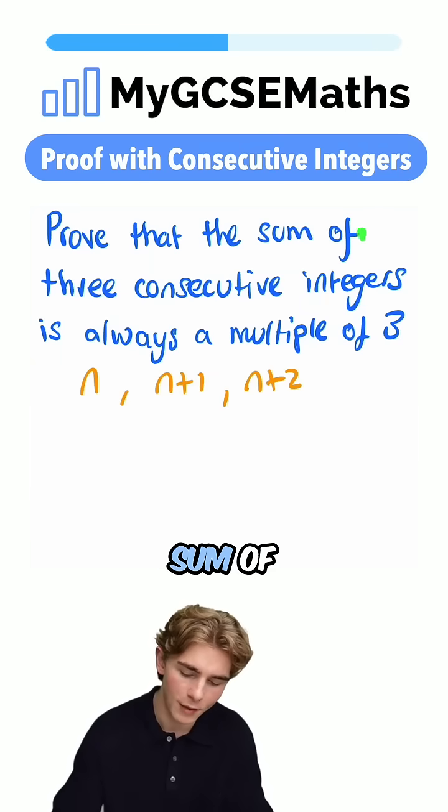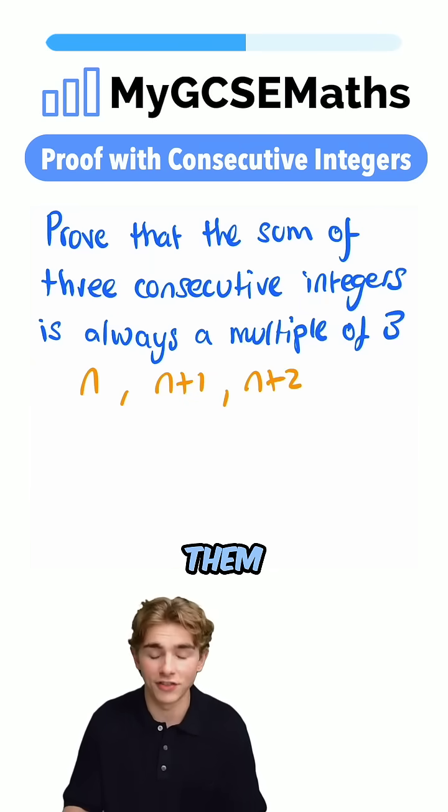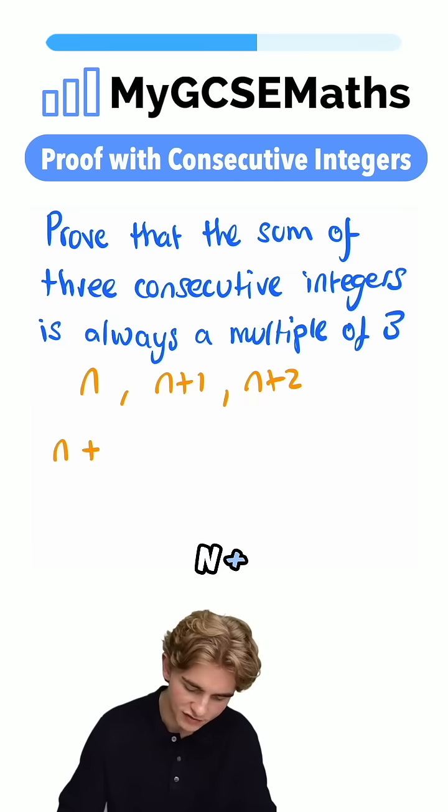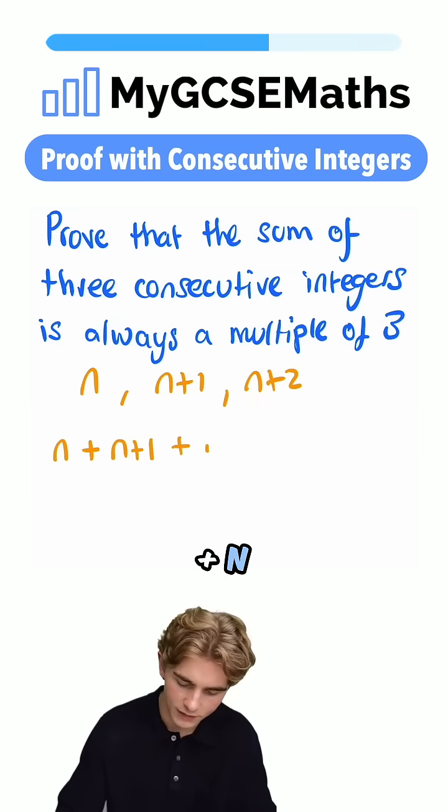Now, to show that the sum of these is a multiple of three, what can we do? Well, we're going to add them all together, so we're going to do n plus n plus one plus n plus two.